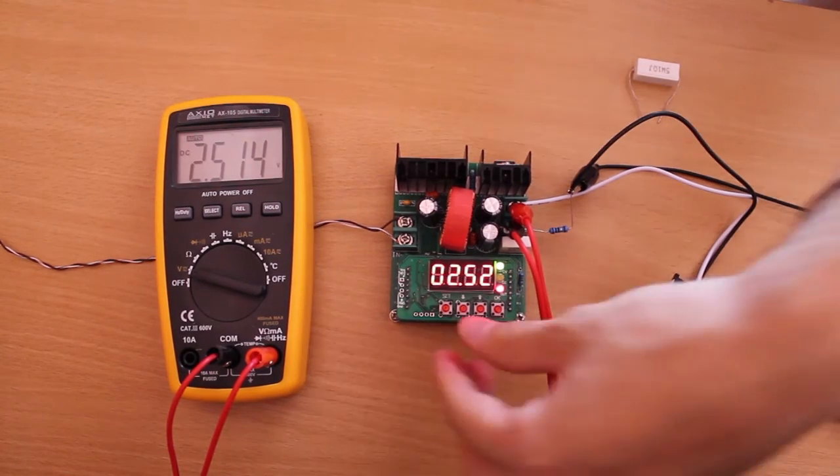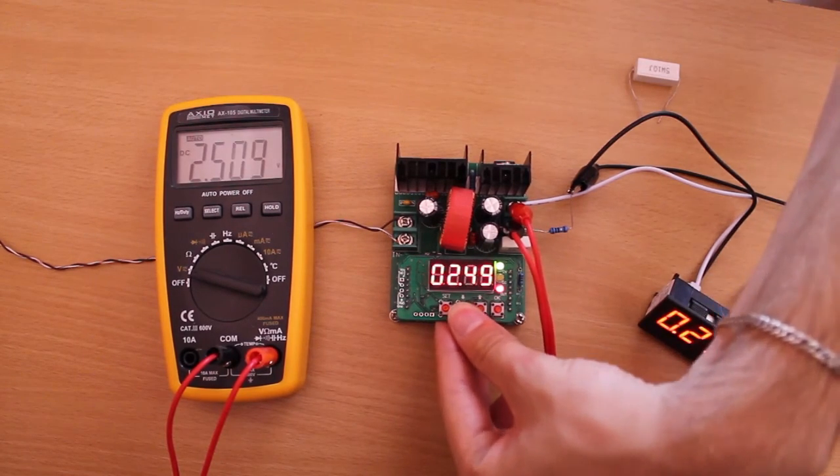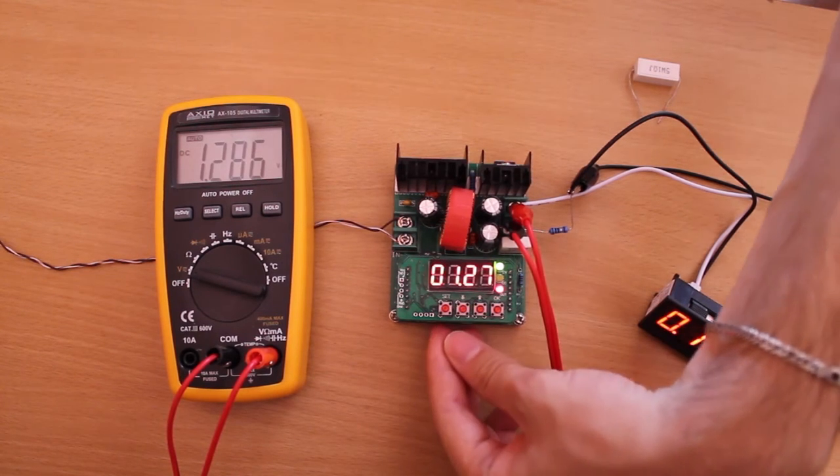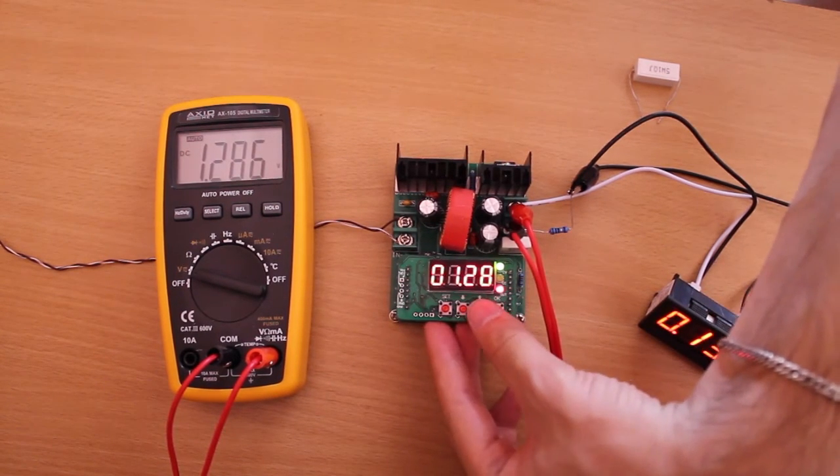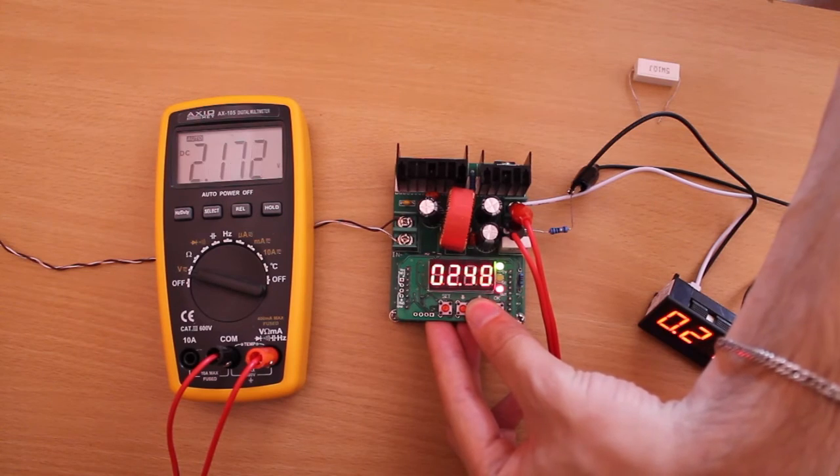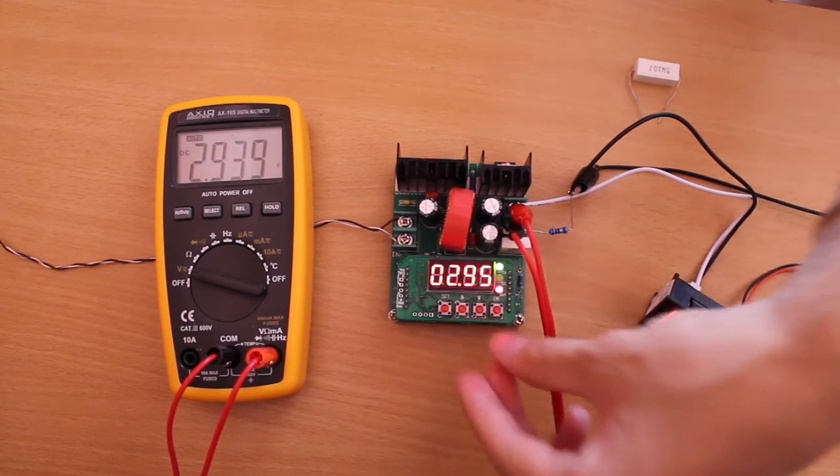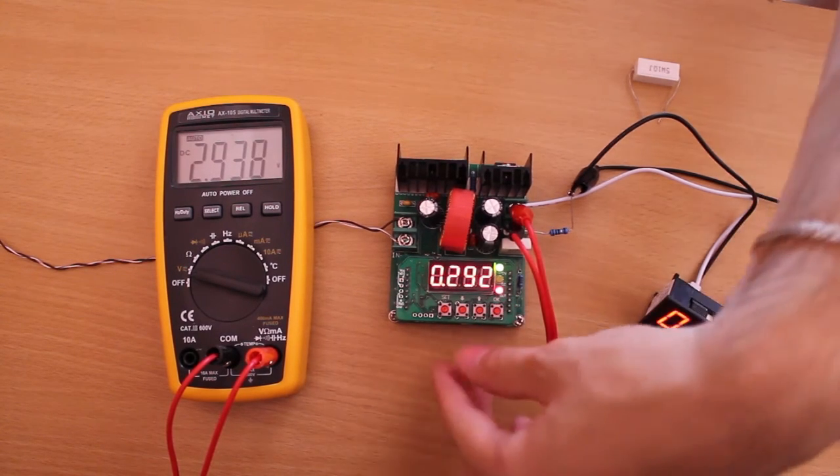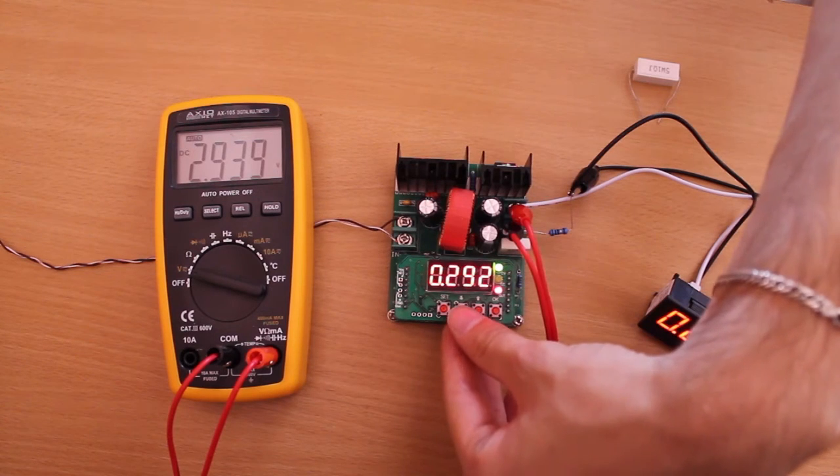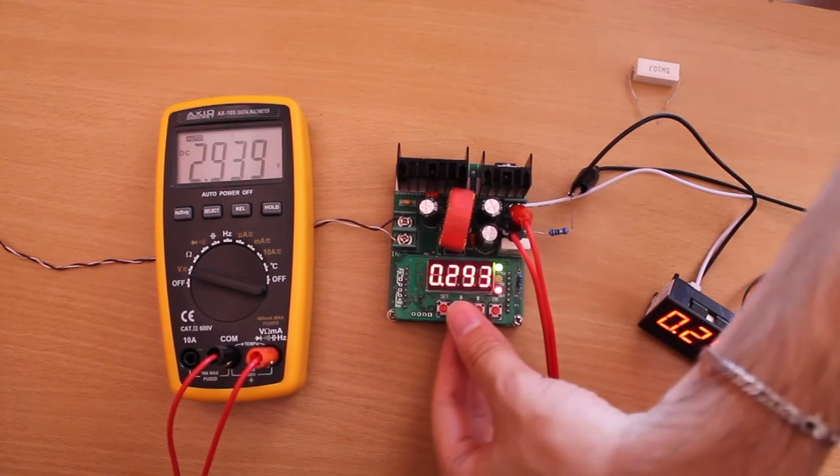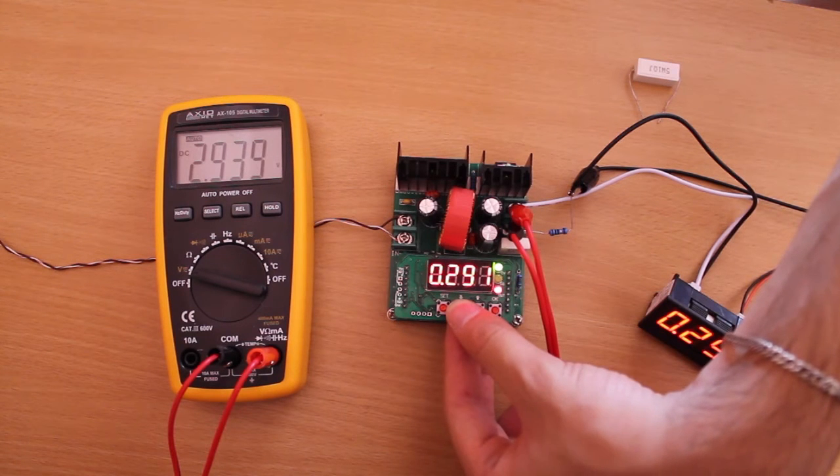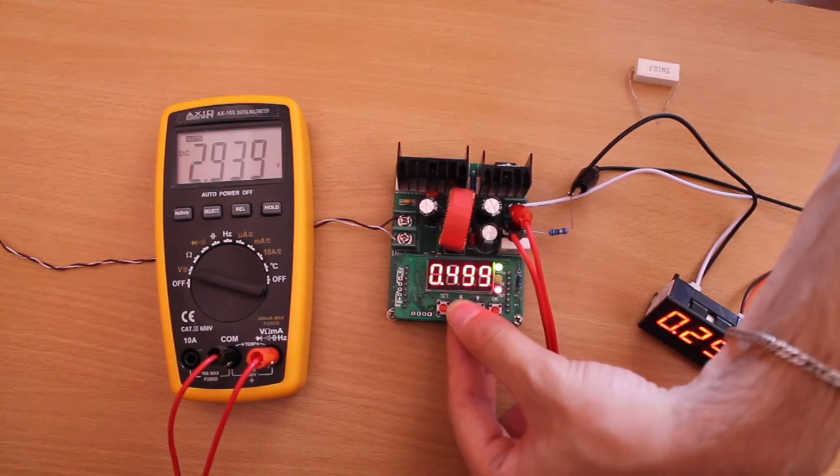You can adjust the values while outputting. So if we drop the voltage, you can see it. Or switch to current and if we drop the current limit to below the current consumption, which right now is 291mA.